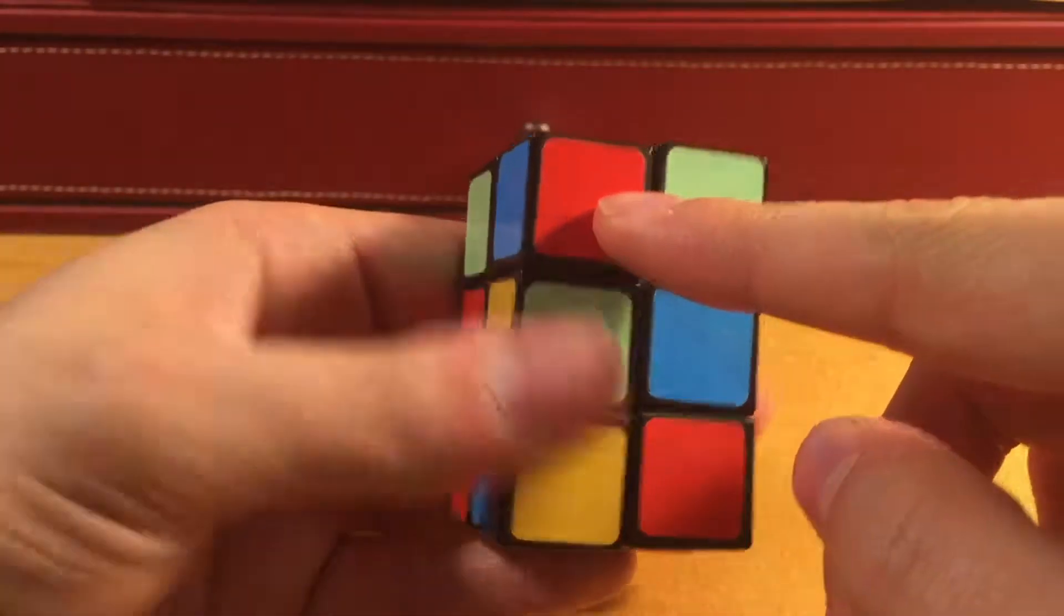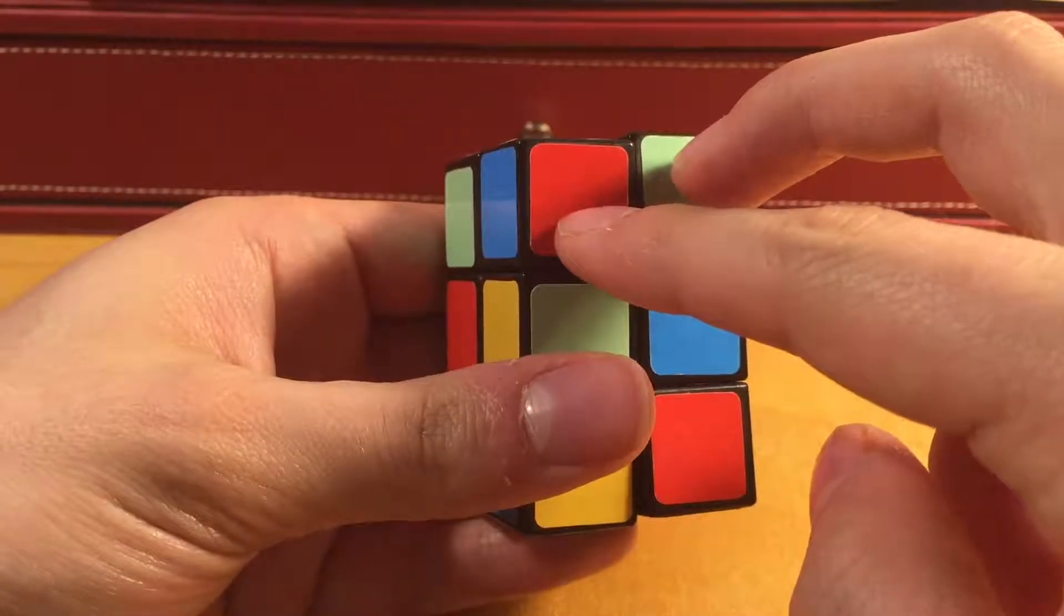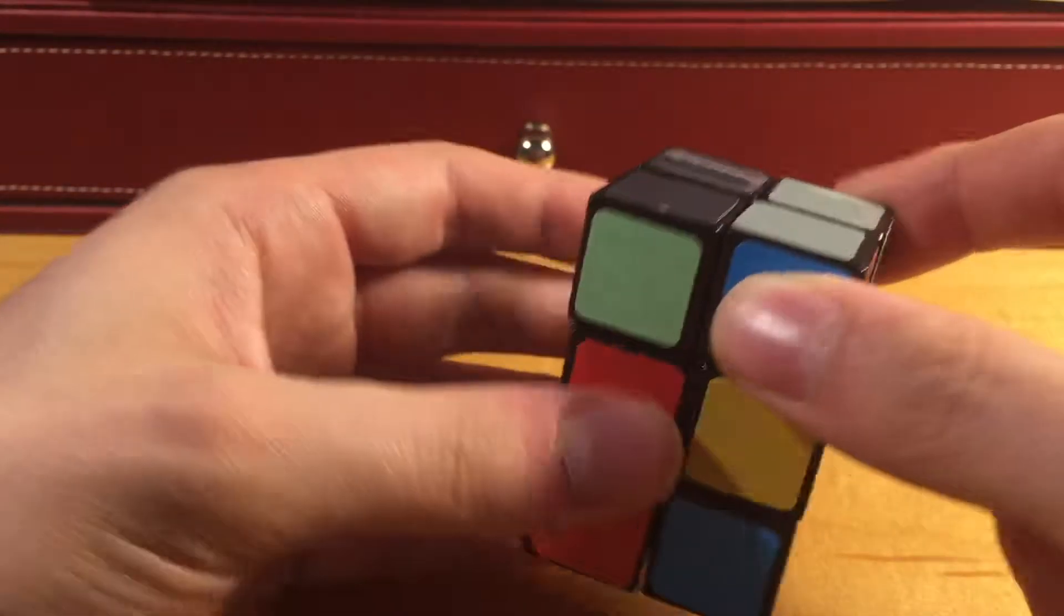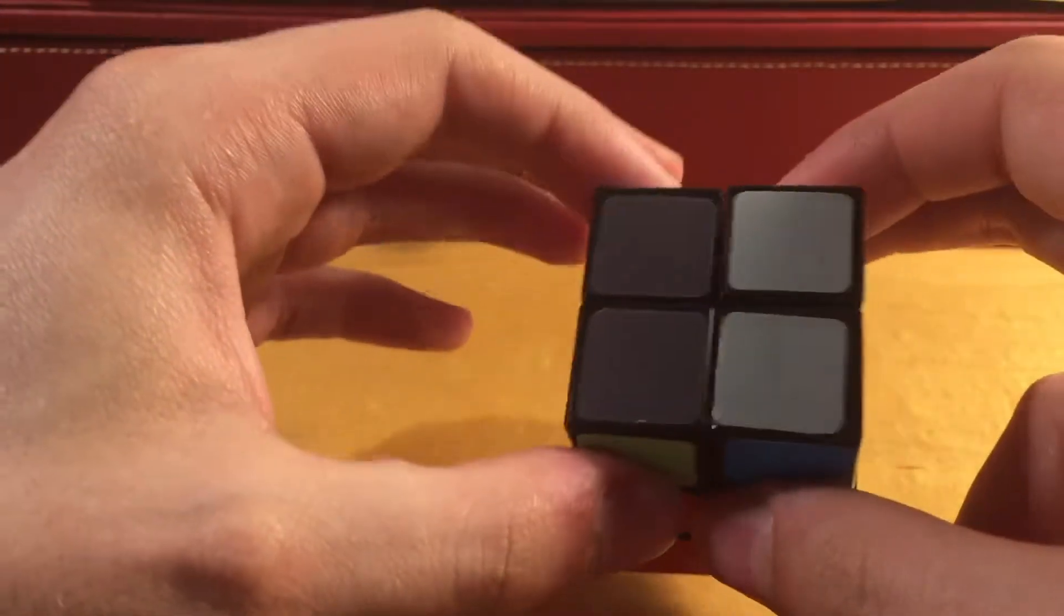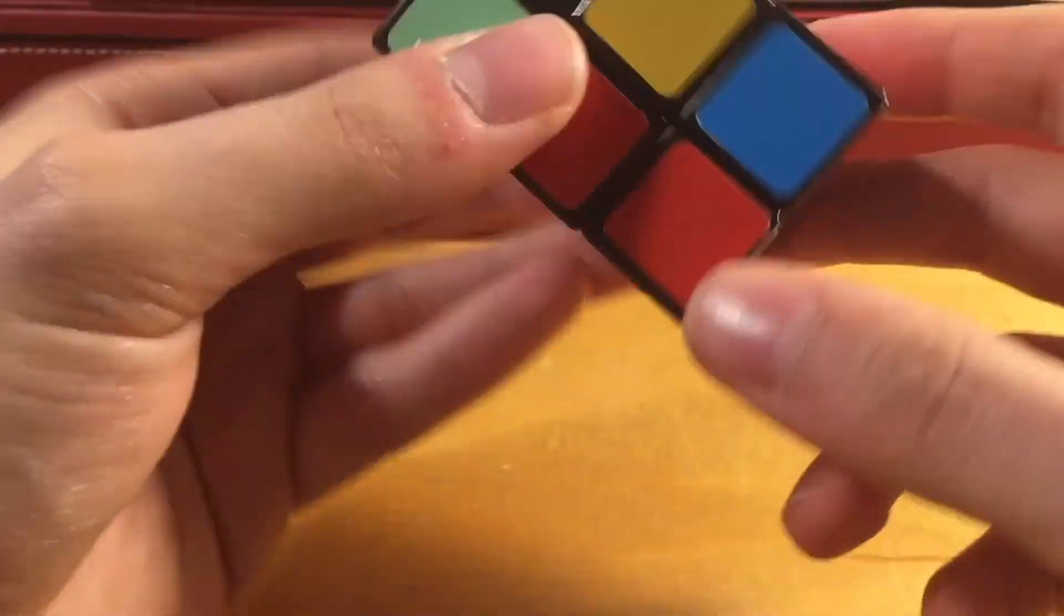However, if you look at the light gray, these two corners are incorrectly paired, so these two would need to be switched, but these two don't because these form a yellow bar. So, I'm going to start by solving the dark gray face.